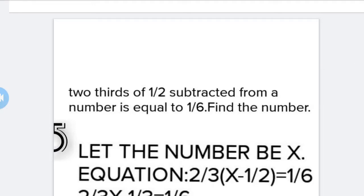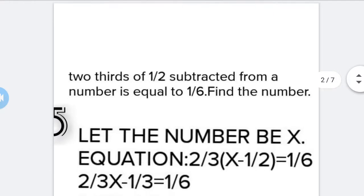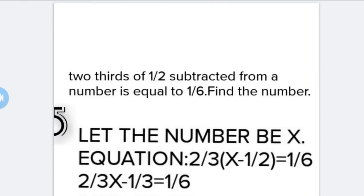What is our fifth question? Two-thirds of one-half subtracted from a number is equal to one-sixth. Find the number. So we have to find two-thirds of a number, then subtract one-half from it, and that equals one-sixth. We will assume the number to be x.